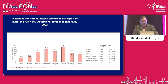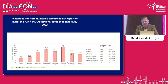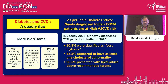Coming to this ICMR in-depth study, you can see that diabetes affects 101 million patients and a lot of comorbidities like dysglycemia, hypertension, generalized obesity, abdominal obesity, hypercholesterolemia, and high LDL cholesterol are associated, all of which lead to increased CVD risk.